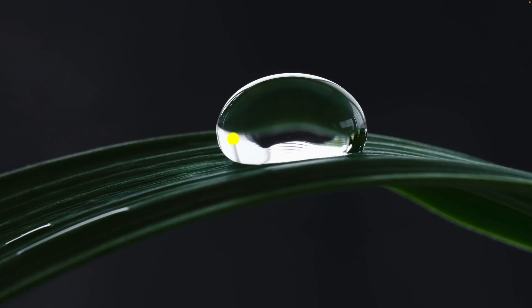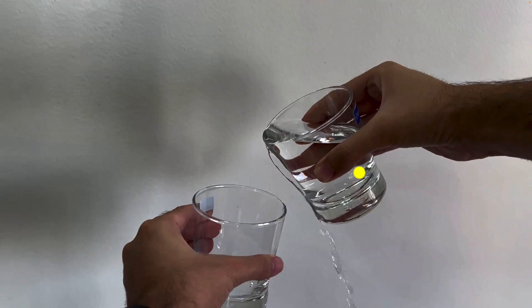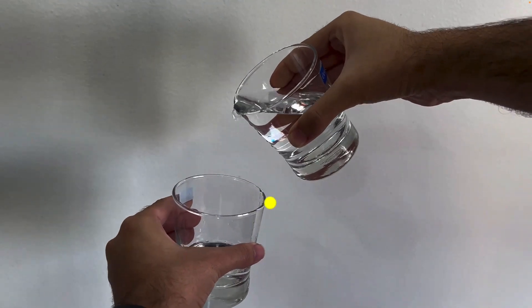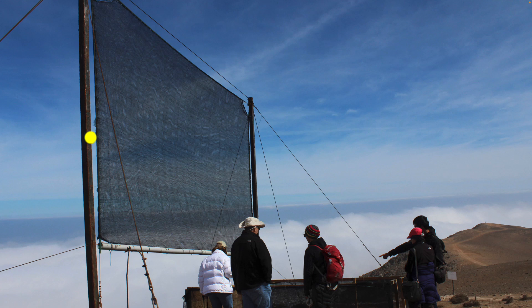Why does water form these beautiful droplets? And why do I always spill water when I'm pouring it from one glass to another? And what's this all got to do with capturing water from air using fog nets? Well, let's find out.